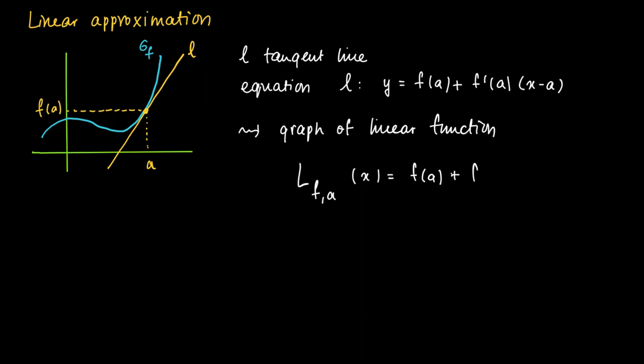So the linear function L f a in x equals f of a plus f prime of a times x minus a is called the linear approximation of f in a. So L is the graph and the line L is the graph of the linear approximation of f in a.